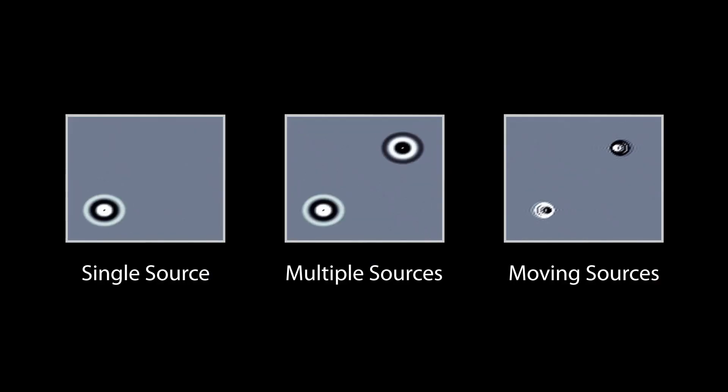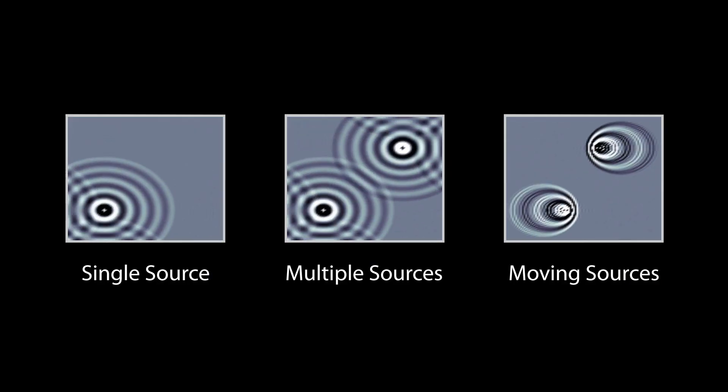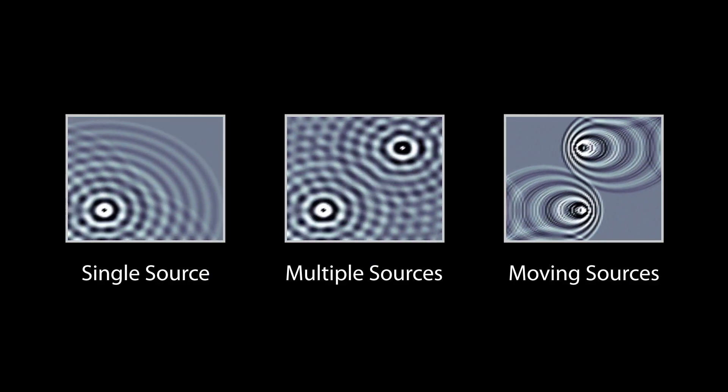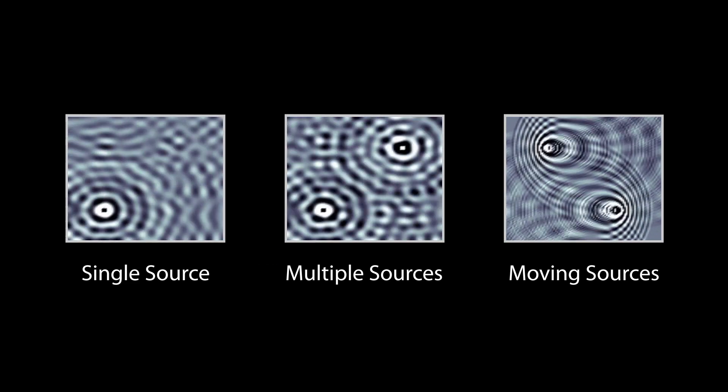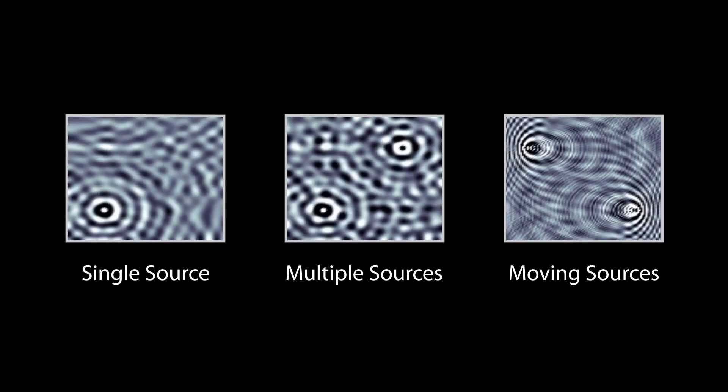Often in room acoustics, we consider a sound source at a single position in a room and a listener at another position in the room. But these equations also allow us to model moving sources and listeners, and multiple sources and listeners in the room.